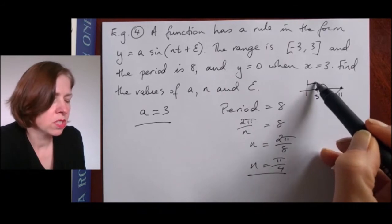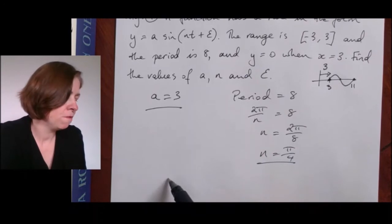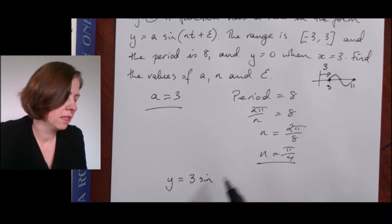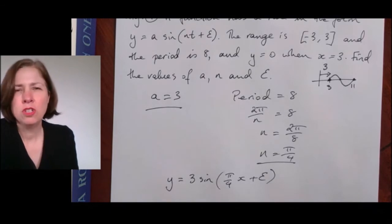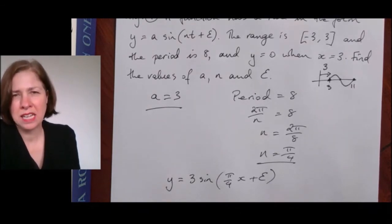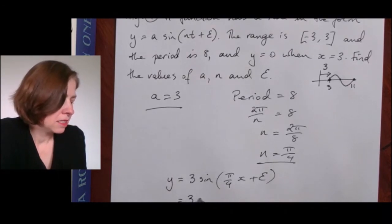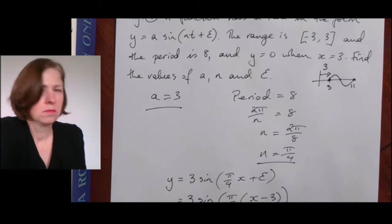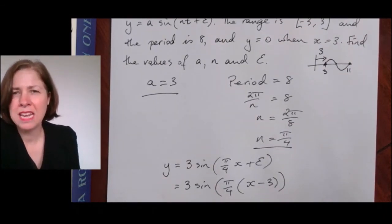Focusing on that first x-intercept, this tells me I've taken a normal sine graph and it's moved to the right by three. So far I know my function is y equals three sine of (pi on four times x plus epsilon). Using what I know about translations, I can also write it as three sine of pi on four times (x minus three), since a translation to the right of three looks like that in my equation.